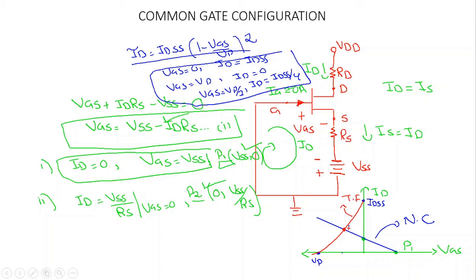The intersection of the network curve and the transfer characteristic curve gives us a common point called the Q-point or operating point. At this point we identify IDQ and VGSQ. By this graphical approach we have found VGSQ and IDQ. Once IDQ and VGSQ are found, we can determine the output voltage VDS.